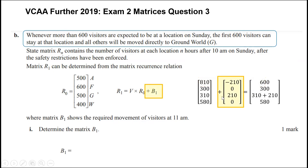Matrix B1 represents moving 210 from location A to location G. There's not too much calculation involved, but there's quite a bit of interpretation and understanding of what the whole question is talking about.